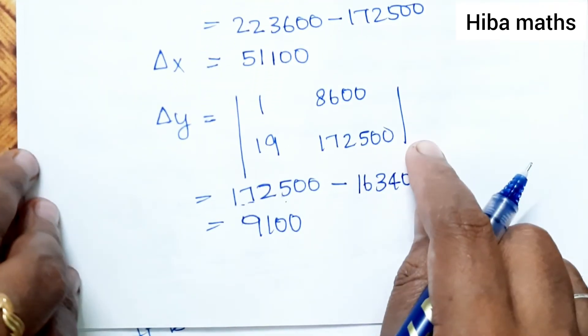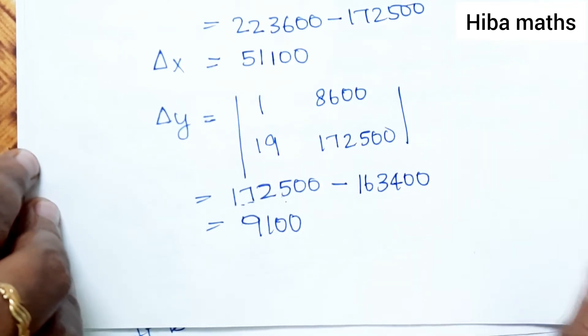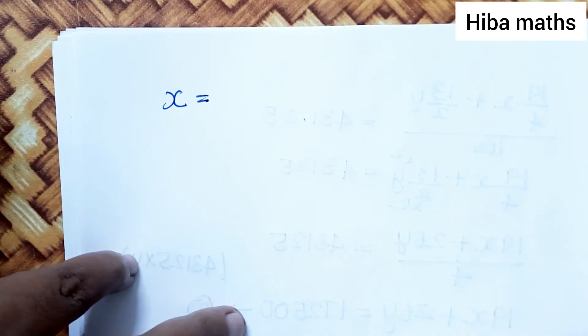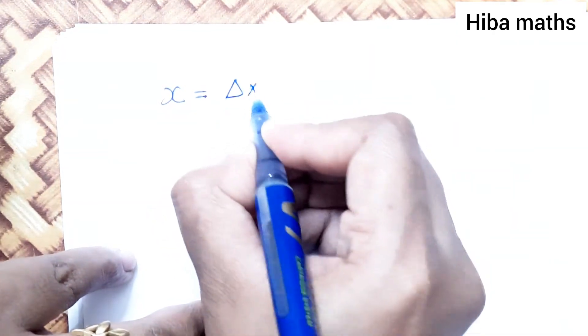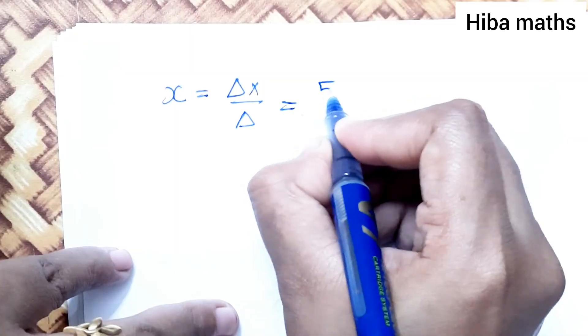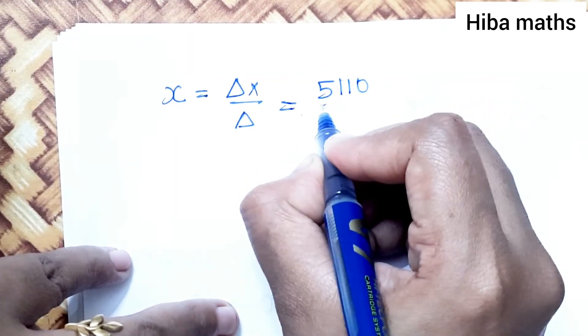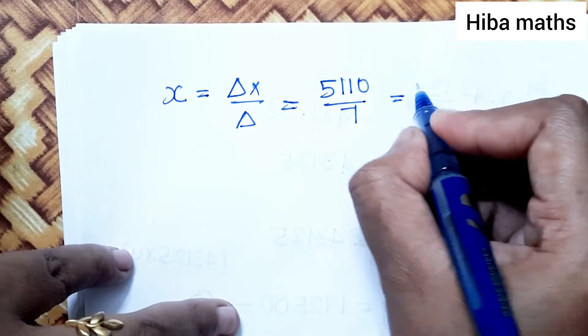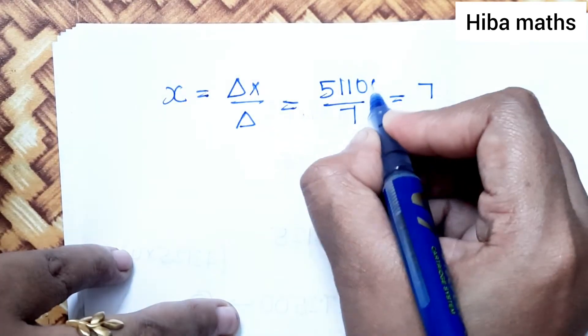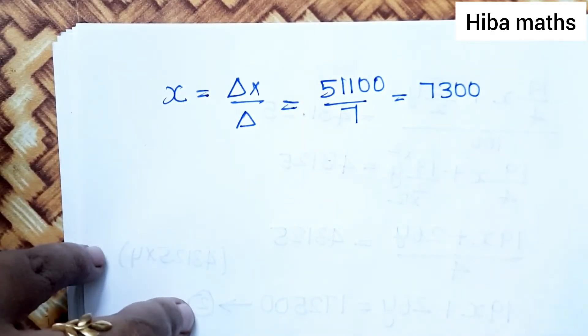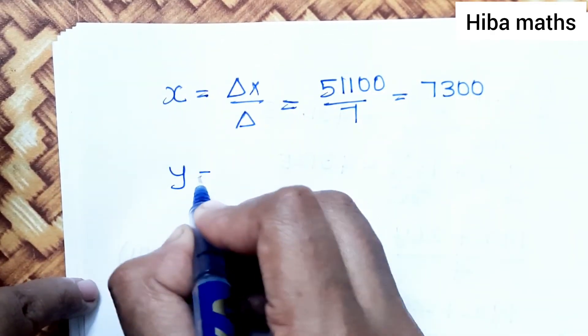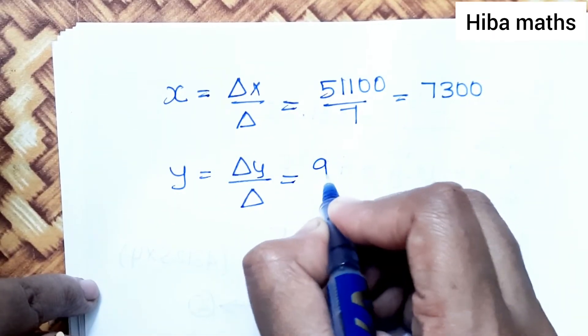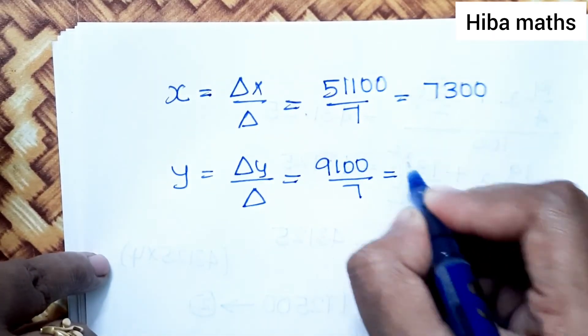Now X equals Del X divided by Del, which is 51100 divided by 7, equals 7300. Y equals Del Y divided by Del, which is 9100 divided by 7, equals 1300.